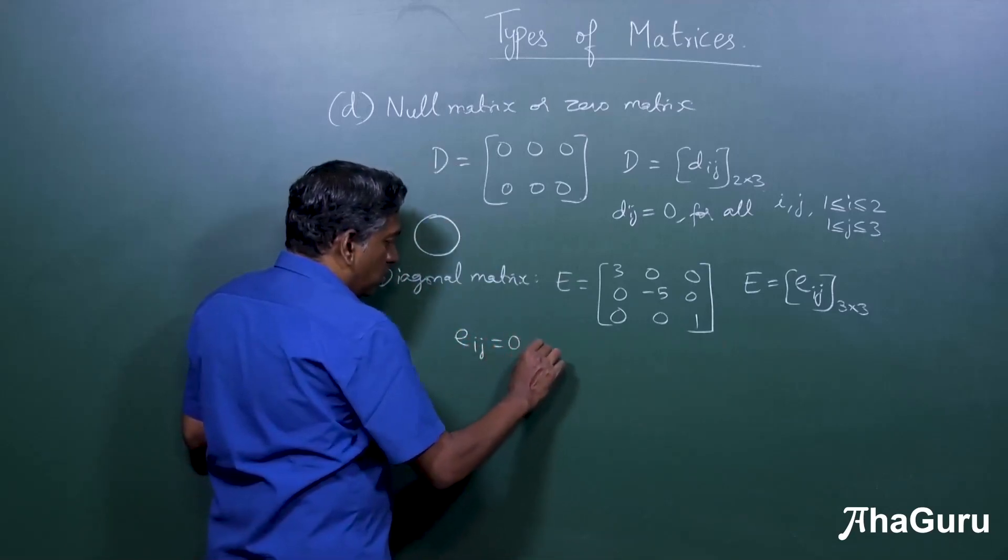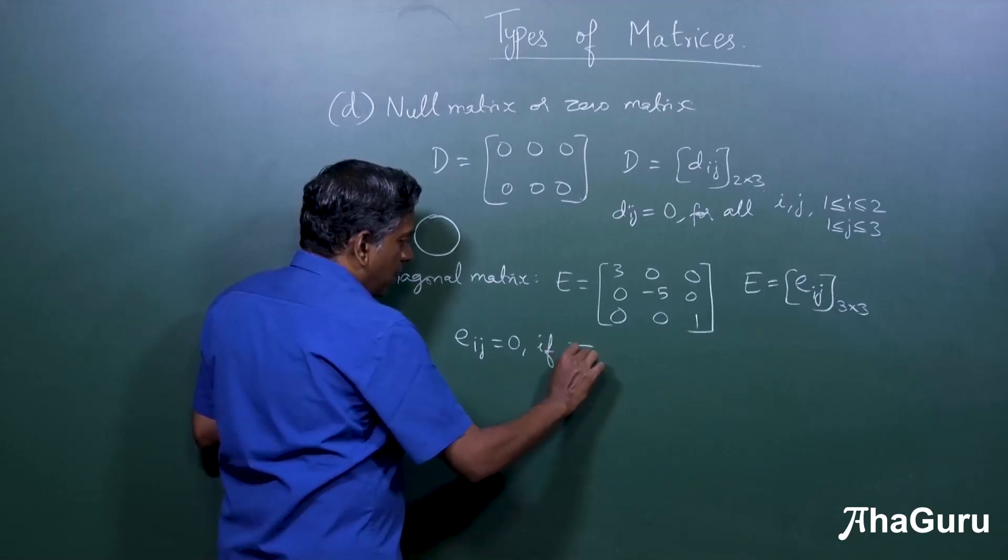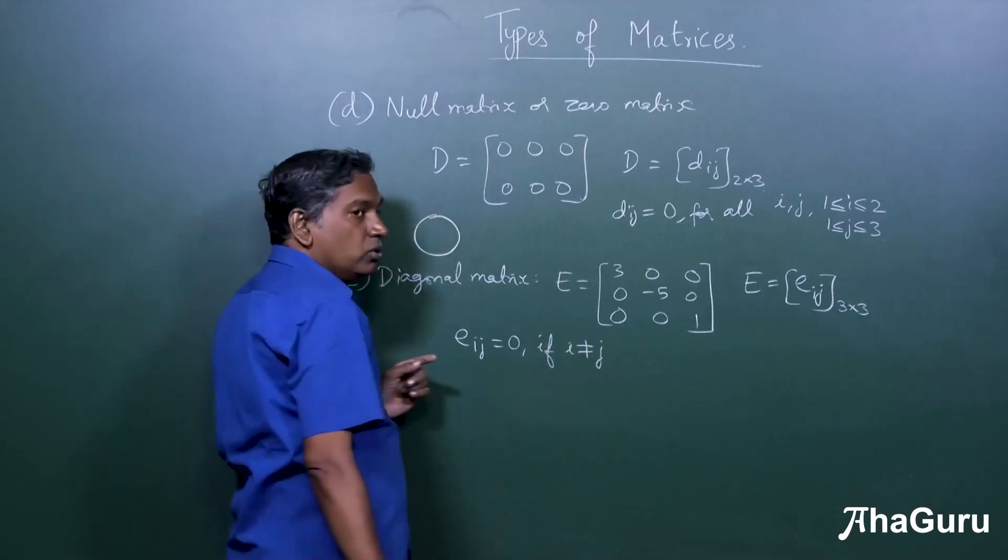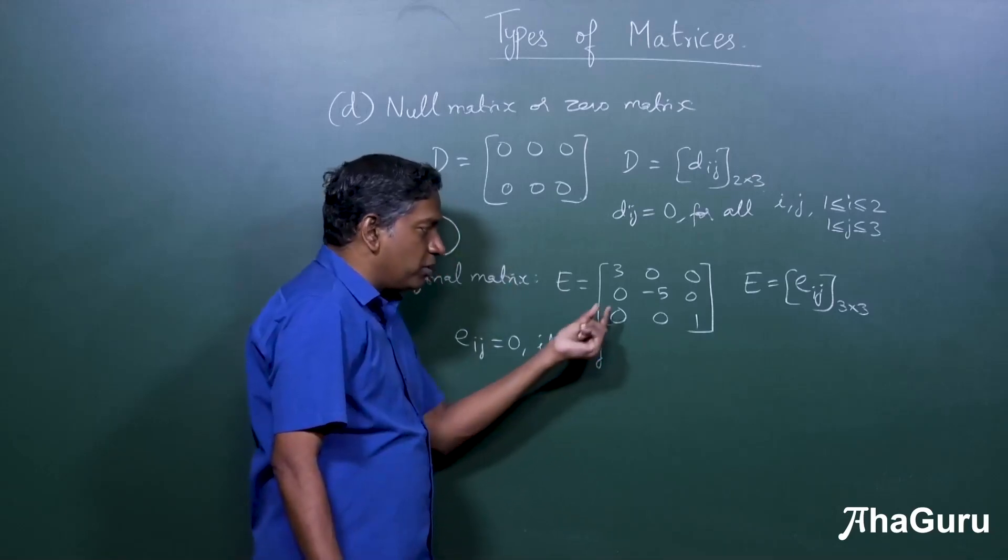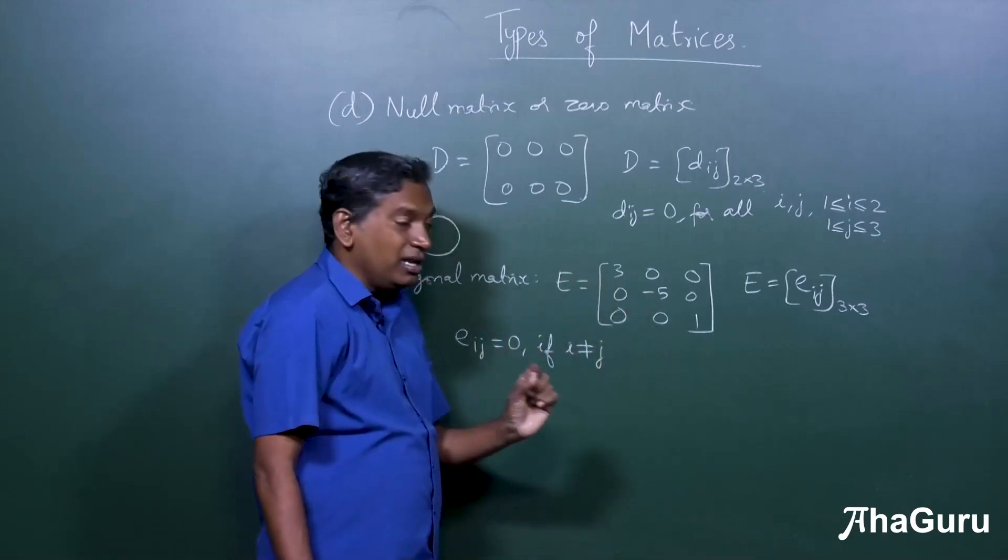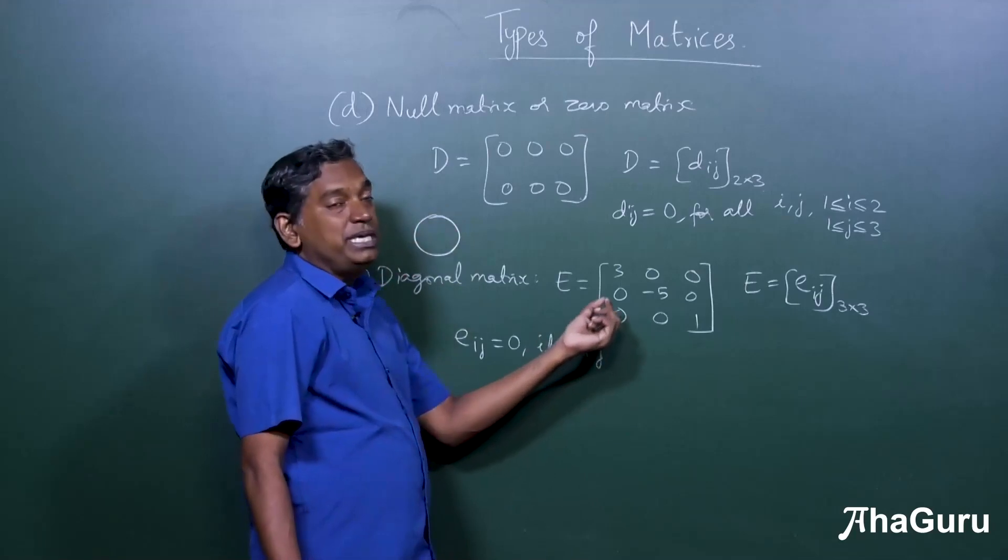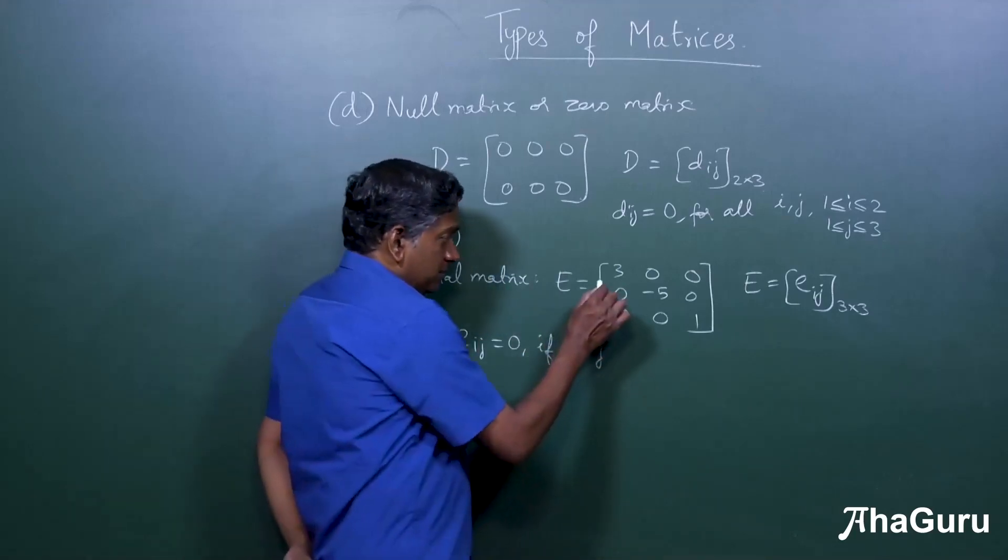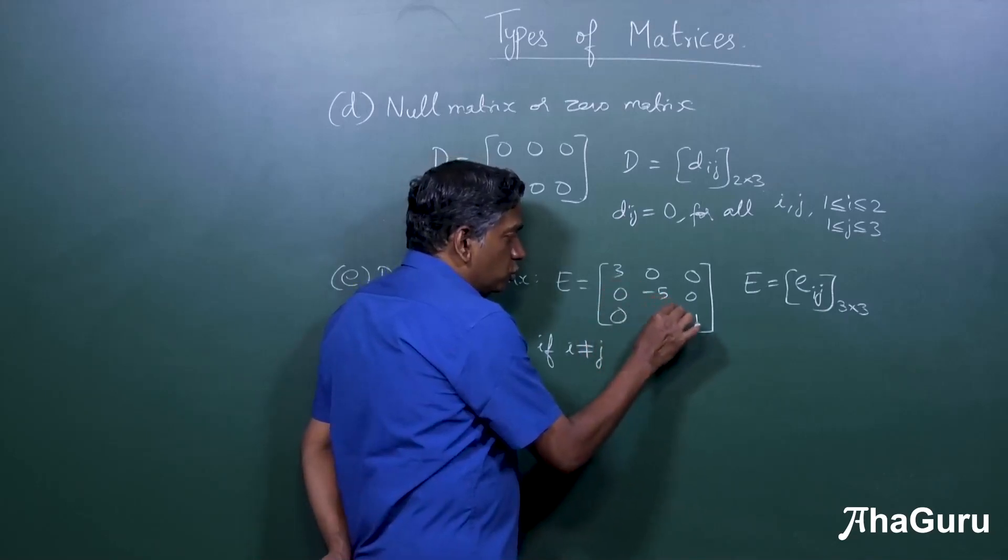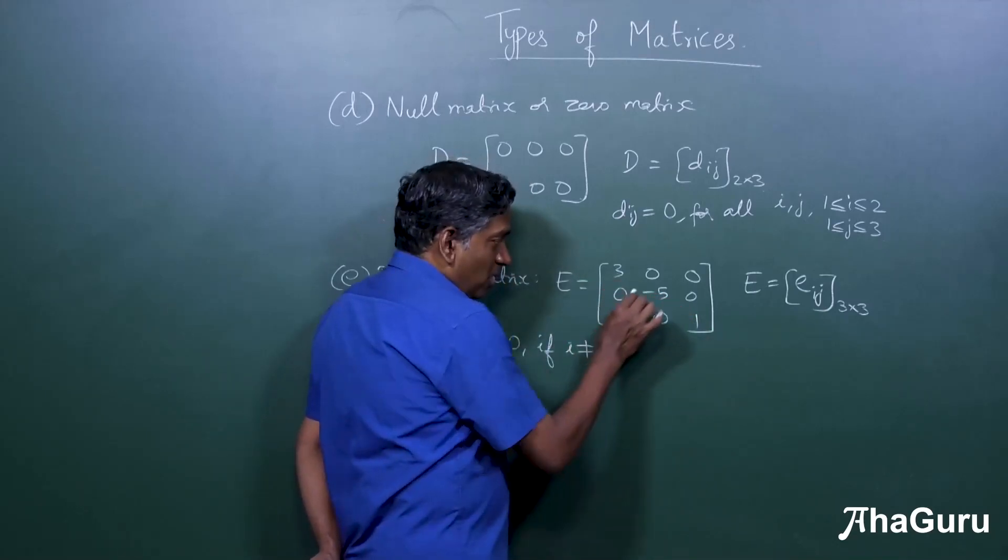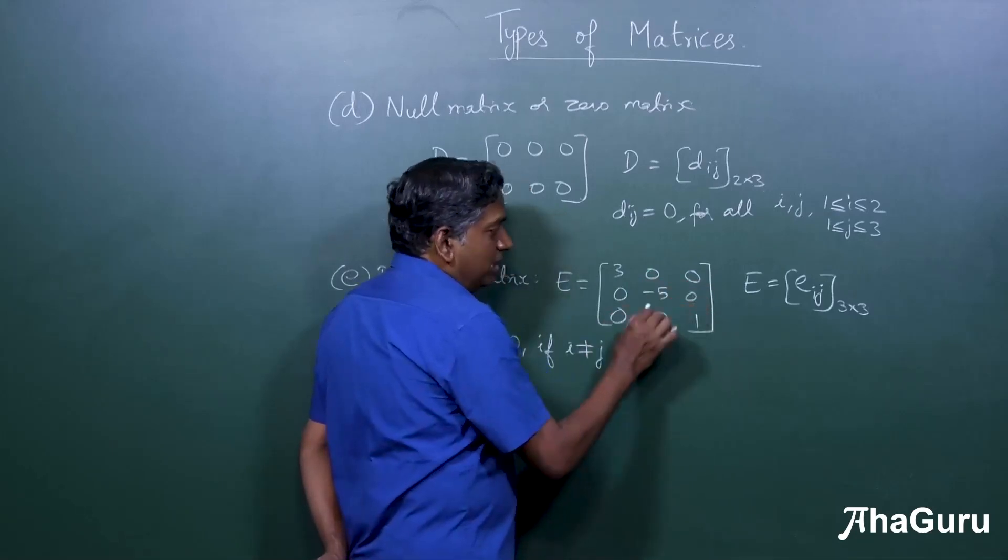In a diagonal matrix, Eij equals zero if i not equal to j, which means if the row number and column number of an entry are not equal, then that entry will be zero. So here, these entries are diagonal: one one, two two, three three, etc. All the other things are non-diagonal.